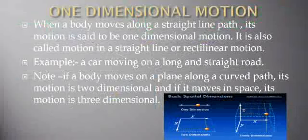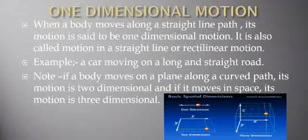When a body moves along a straight line path — this is the keyword: straight line path — its motion is said to be one-dimensional motion. It is also called motion in a straight line or rectilinear motion. For example, a car moving on a long straight road. If a body moves on a plane along a curved path, its motion is two-dimensional motion. And if it moves in space, its motion is three-dimensional motion.